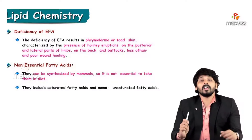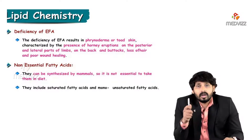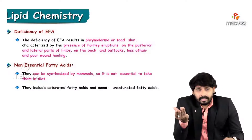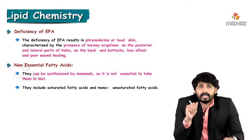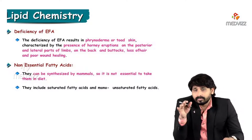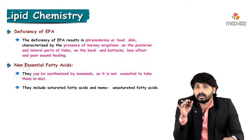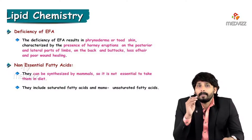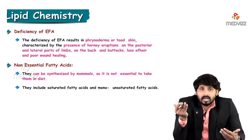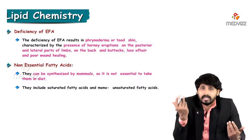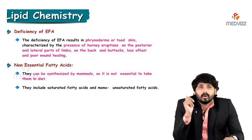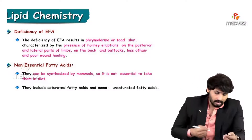The consequences of a diet deficient in essential fatty acids include phrynoderma — hardening or roughening of the skin. Essential fatty acids are required for smoothening of the epithelium of the dermis. Deficiency causes phrynoderma with horny eruptions on the posterior and lateral parts of the limbs, back, and buttocks, along with hair loss and poor wound healing.